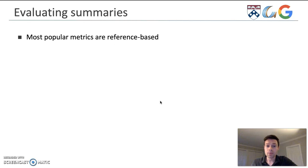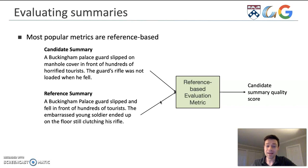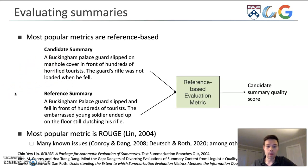The most popular way that people evaluate summaries today is with reference-based evaluation metrics. In the way that these work, if you are given a candidate summary that you need to score — for example, one about a Buckingham Palace guard that slipped on a manhole cover — a reference-based metric calculates a quality score by comparing it to a reference summary written by a human. The most popular metric is ROUGE, which calculates similarity based on n-gram overlap, and it's very popular today despite many known issues, including its correlations to ground truth judgments.